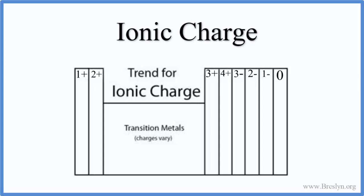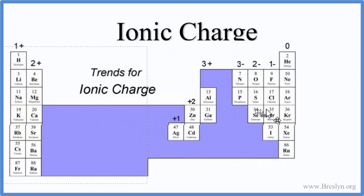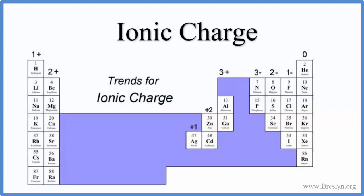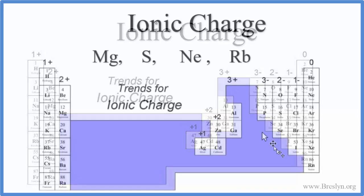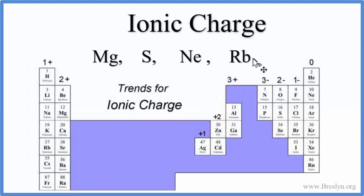A more detailed periodic table for ionic charge looks like this. It's the same general trend: 1+, 2+, 3+, then 3-, 2-, 1-, 0. But there are a lot of exceptions. We don't know the charge on these elements, and these transition metals also don't have a predictable charge — except for zinc, silver, and cadmium. So pause and find the ionic charge for these elements.